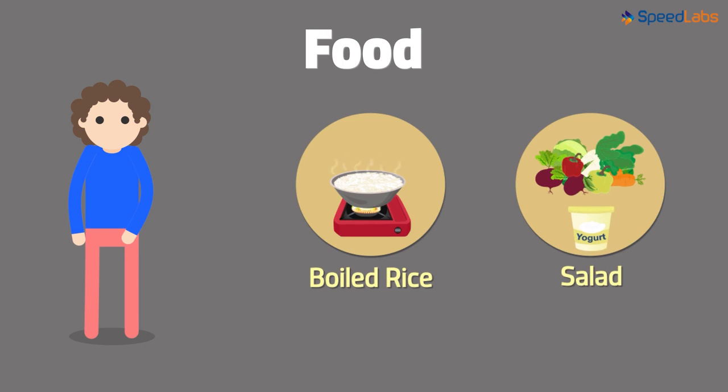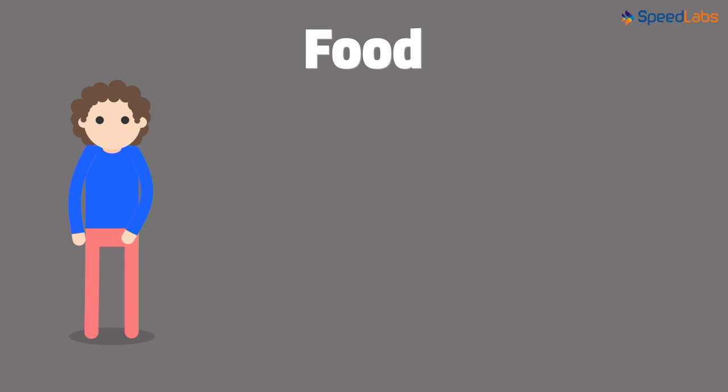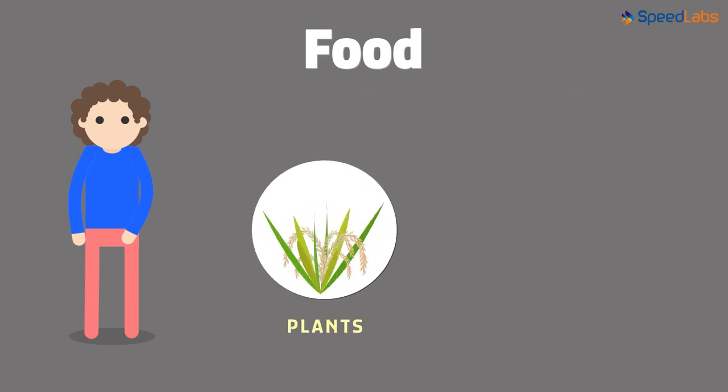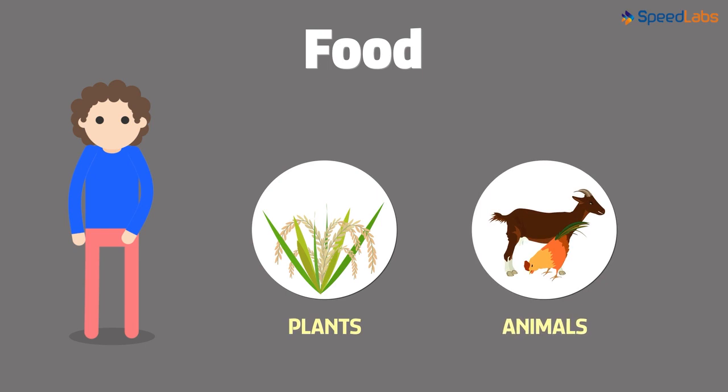Now these were the ingredients that we talked about. Where do you think all these foods come from? For us, food comes from two sources, either from plants or from animals. Living beings like humans consume food from these two sources.